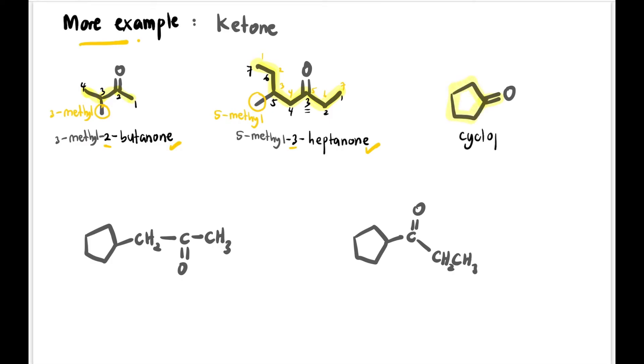Next, the C double bond O is inside a ring, and there are five carbons. So the name is cyclopentanone.